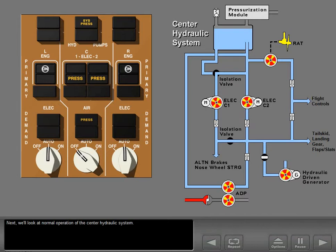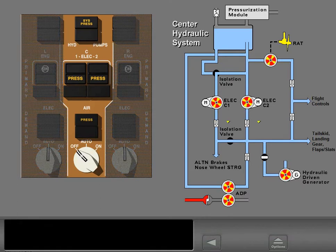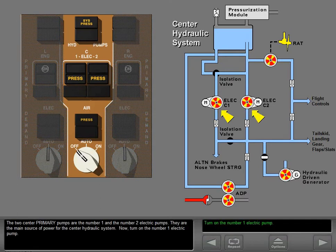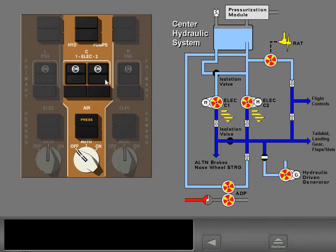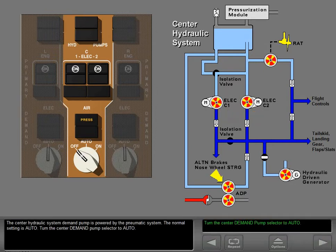Next, we'll look at normal operation of the center hydraulic system. The two center primary pumps are the number one and number two electric pumps; they are the main source of power for the center hydraulic system. Turn on the number one electric pump. Turn on the number two electric pump. The center hydraulic system demand pump is powered by the pneumatic system. The normal setting is auto. Turn the center demand pump selector to auto.